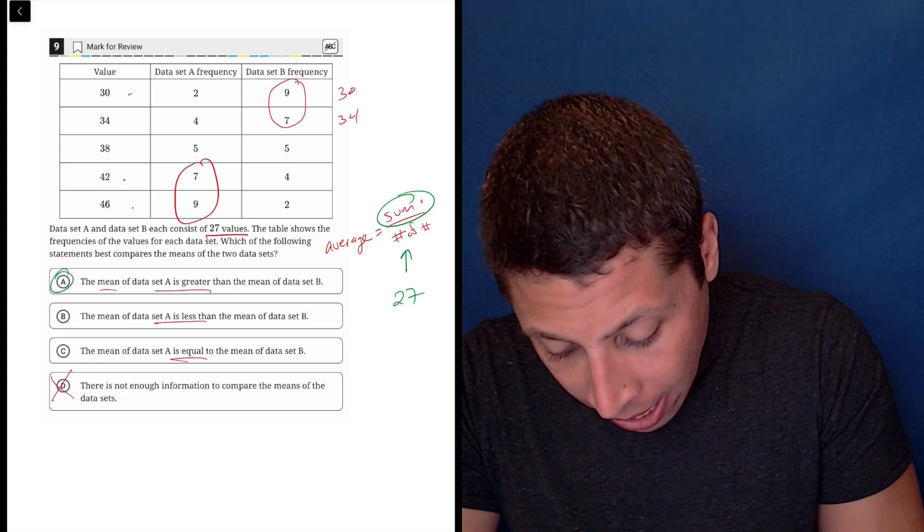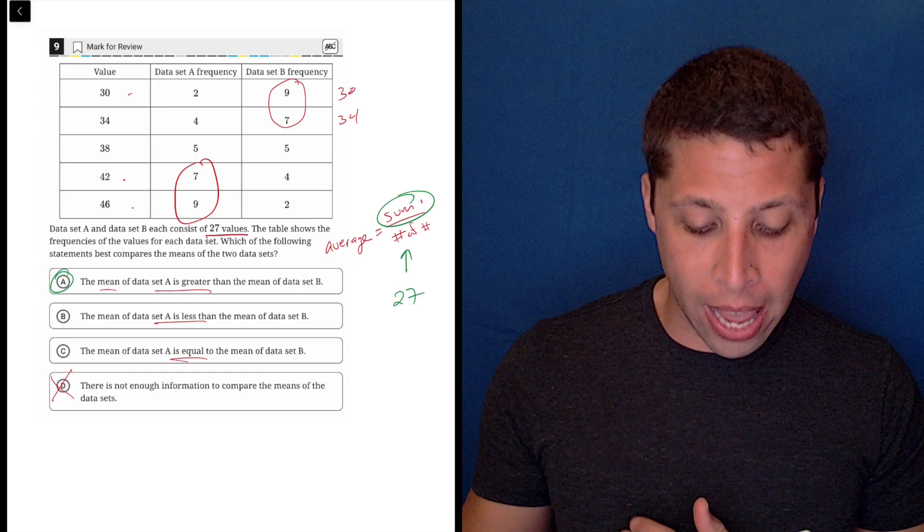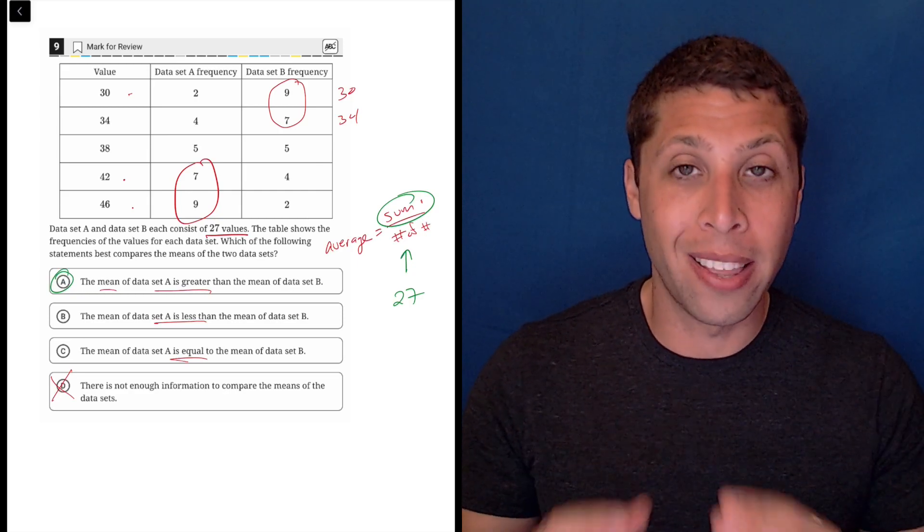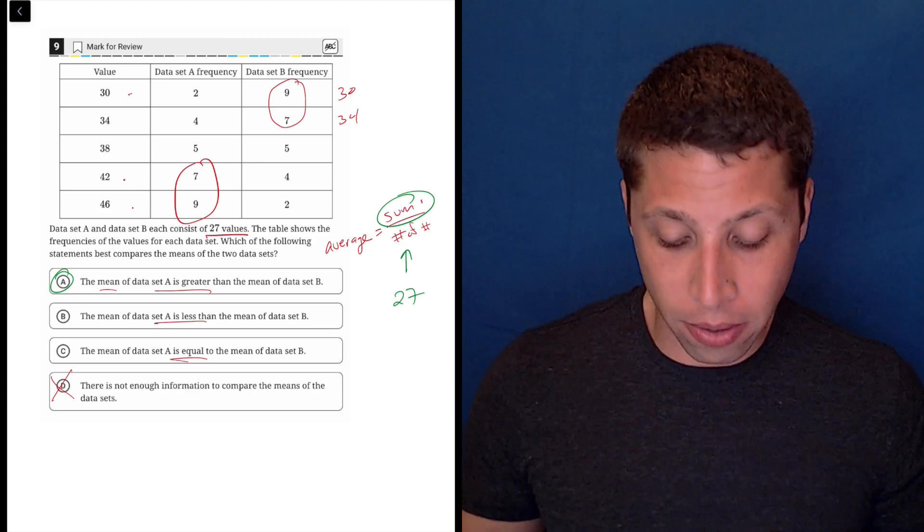So that means choice A is going to be our answer. The mean of set A is greater than the mean of set B. It has to do with where the distribution of these values is.